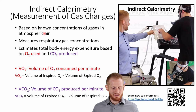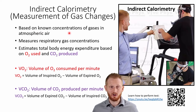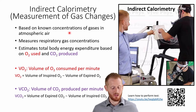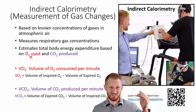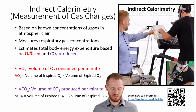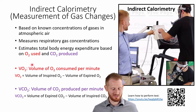We know the basic ratios of gases in the atmosphere — the same percentage of oxygen and CO2 no matter where you are on Earth. So if we know how much oxygen and CO2 is in the room and measure what comes out of the body, we can figure out how much oxygen was used by how far it dips below atmospheric levels, and how much CO2 was produced by how much it rises above atmospheric levels.